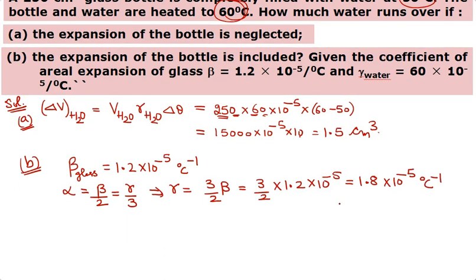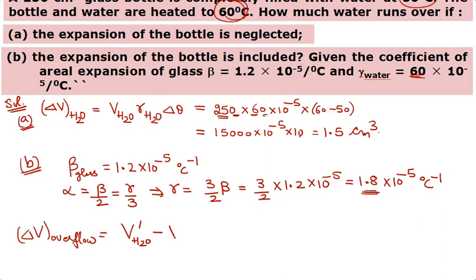The overflow volume = final volume of water − final volume of glass. For final volume of water, I take it from the first part: initial 250 cm³ plus increase of 1.5 cm³ = 251.5 cm³. For final volume of glass: initial volume of glass × (1 + gamma_glass × rise in temperature) = 250 × (1 + 1.8×10⁻⁵ × 10).